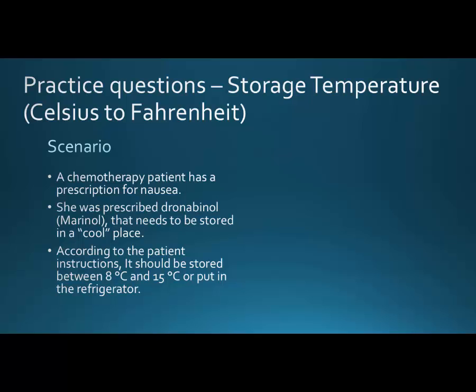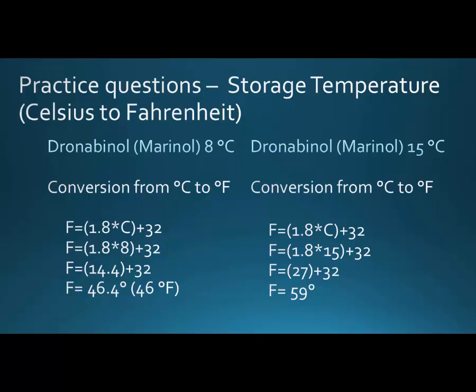One more: a chemotherapy patient is prescribed dronabinol, or Marinol, for nausea, and it needs to be stored in a cool place — which is tricky because a cool place doesn't mean refrigerator. In this case a refrigerator is okay, but for the EpiPen, putting it in a refrigerator would ruin it. The range here is 8°C on the bottom and 15°C on top. So 8°C converts to 46°F, and 15°C — using 1.8 times 15 to get 27, plus 32 — gives 59°F, which defines the storage range to maintain.